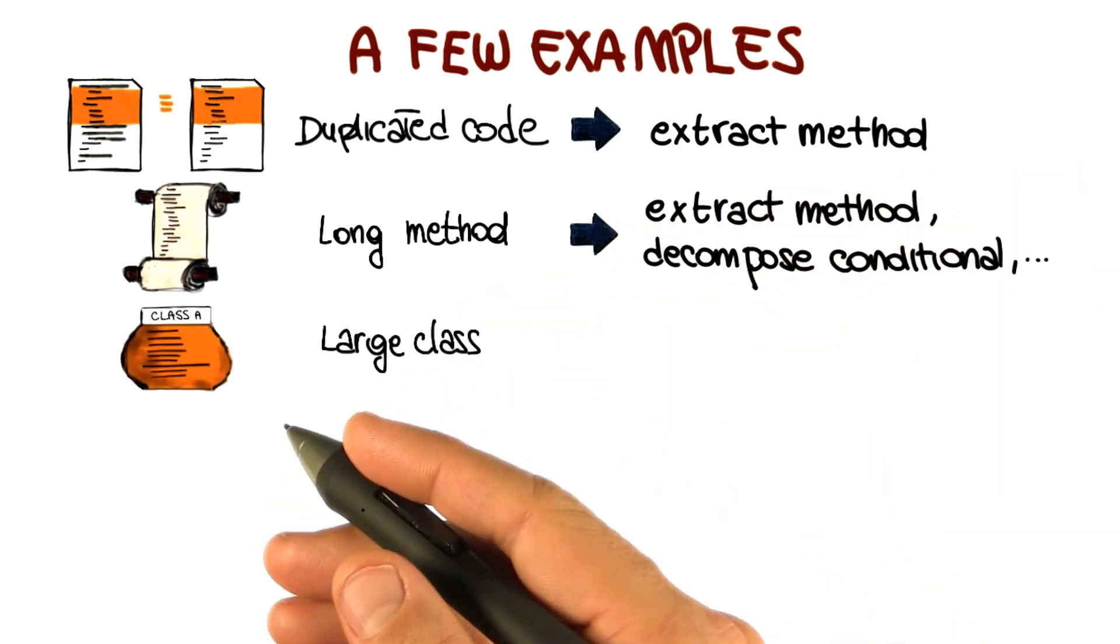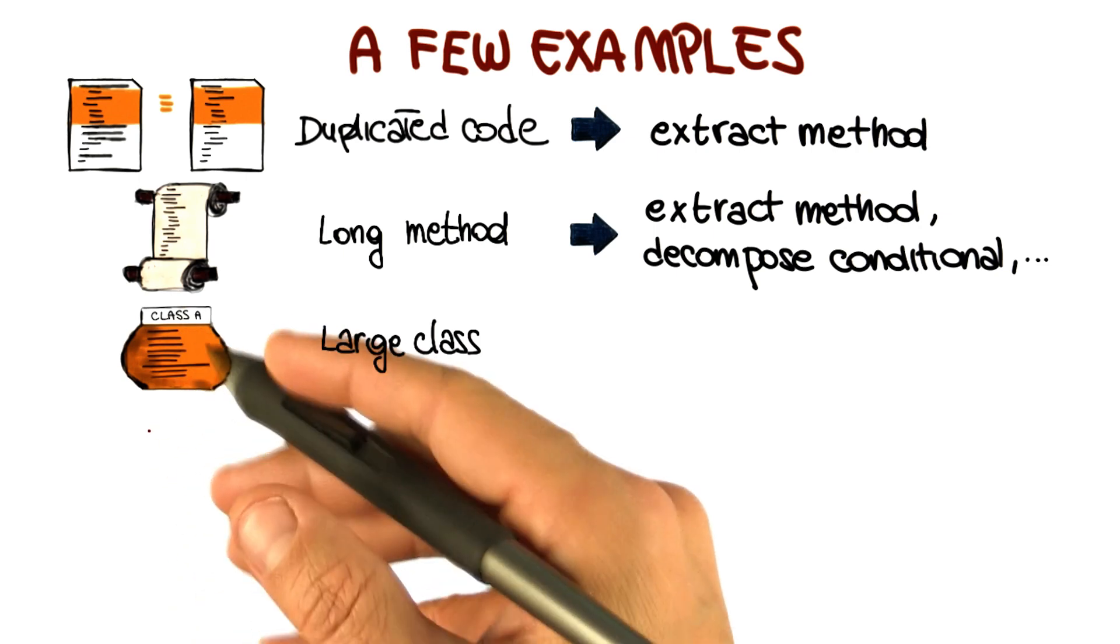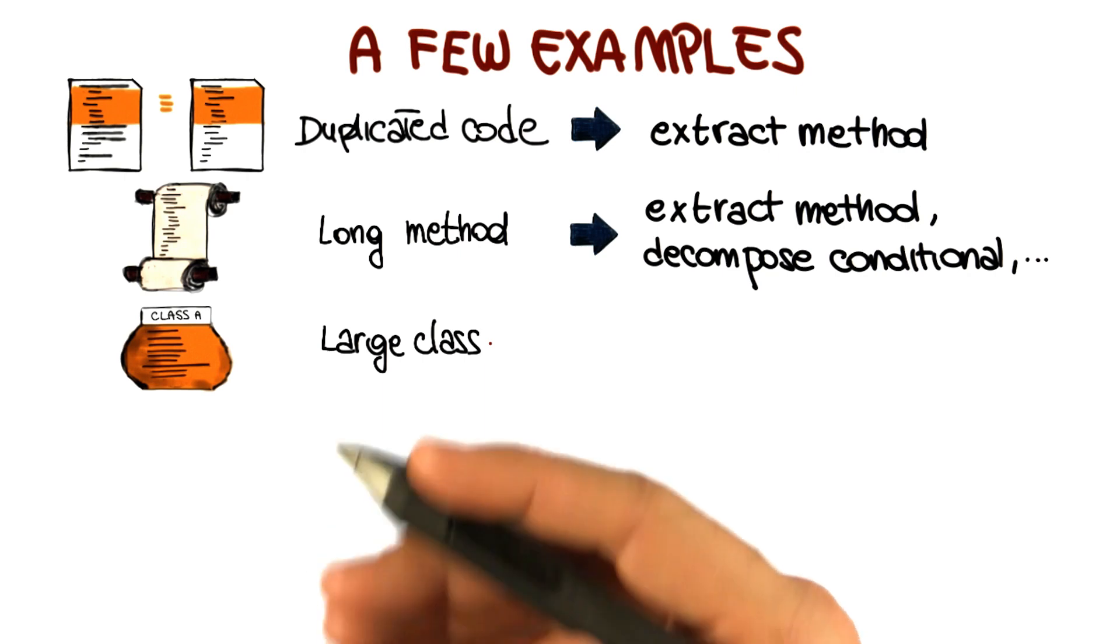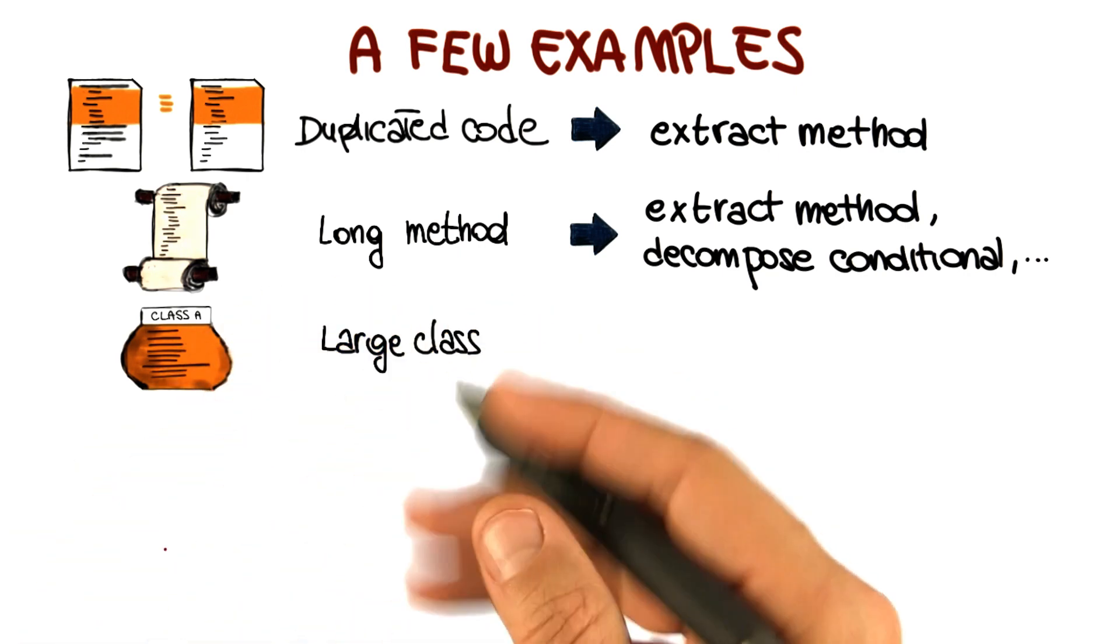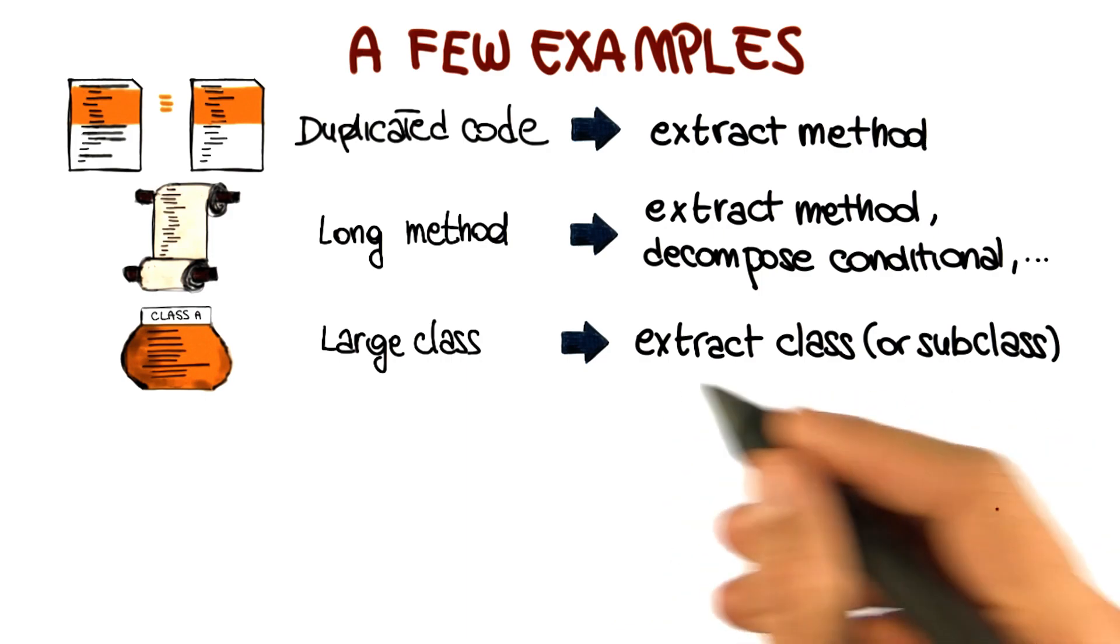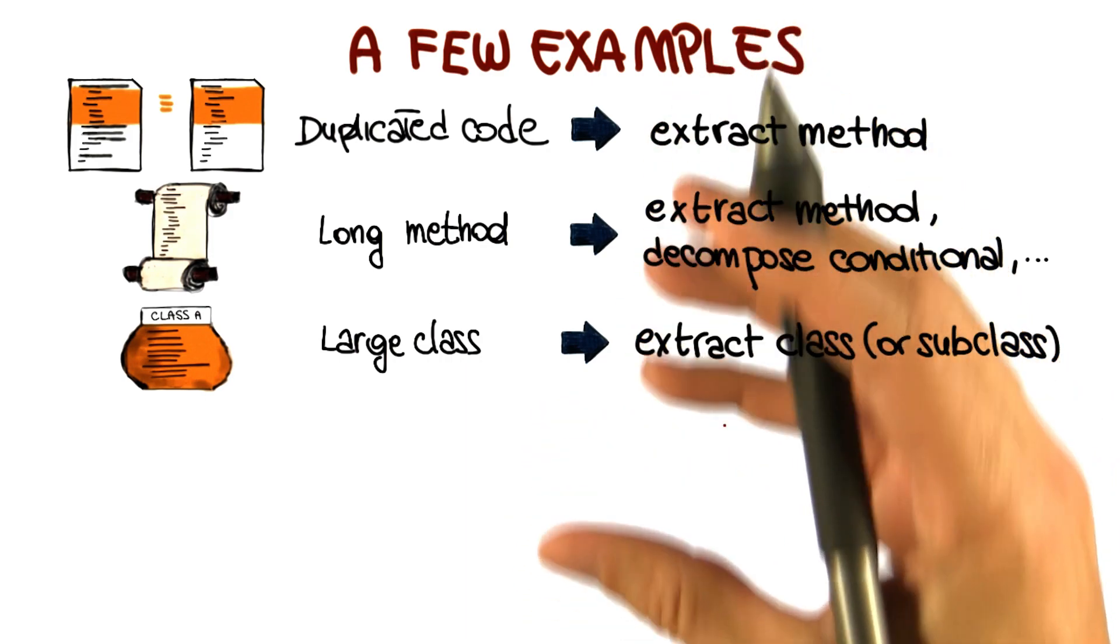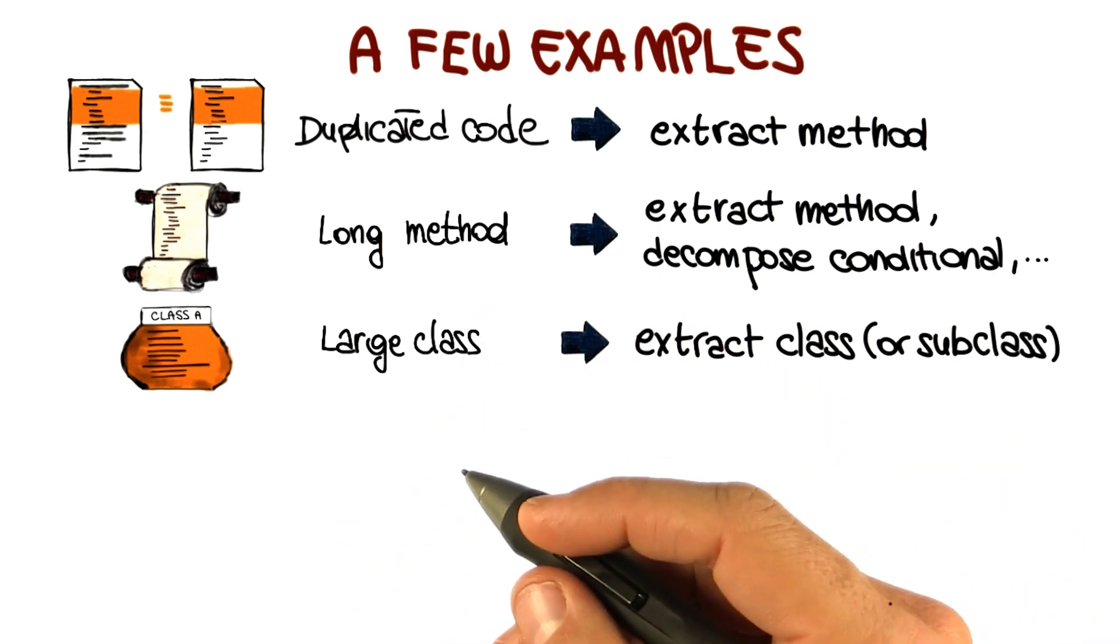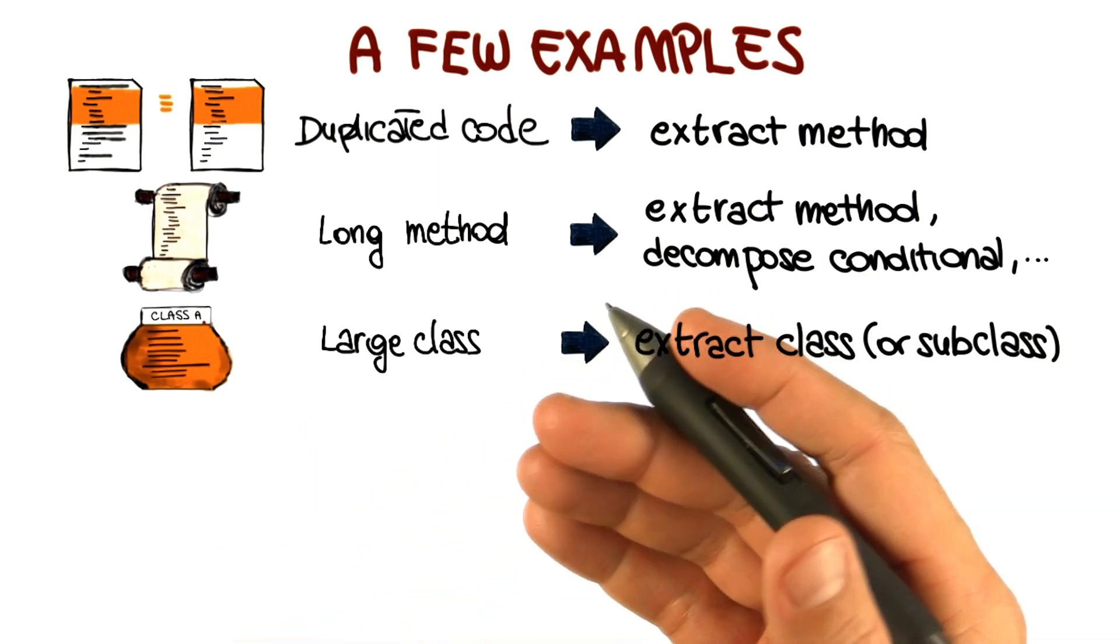Another typical example of bad smell, which is something that can happen very commonly during maintenance, is that you keep adding functionality to a class and you end up with a large class. So a class that is clearly too big. It contains too many fields, too many methods, and it's just too complex to understand. In this case, the obvious solution is to use the extract class or subclass, and basically break down the class in multiple classes. Each one with a more cohesive piece of functionality. So the classes are more cohesive, are more understandable, and the overall structure of the system is improved.